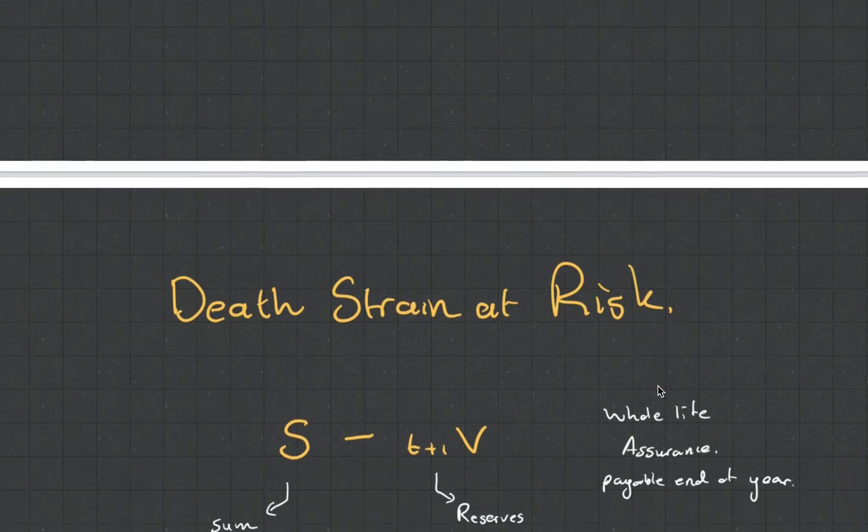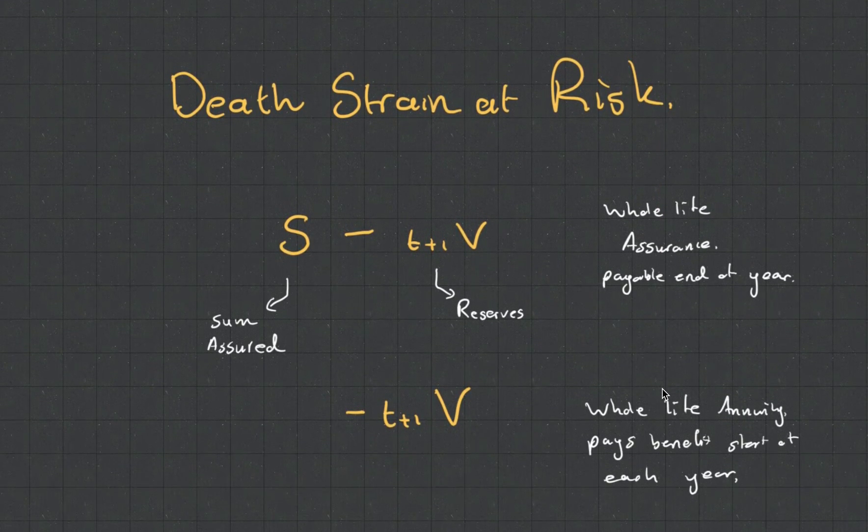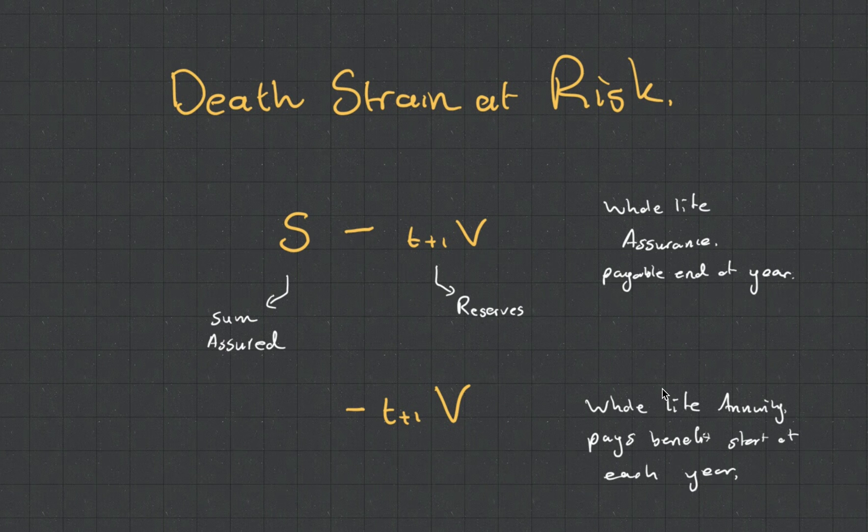The last thing I want to talk about in this video and chapter is death strain at risk. Death strain at risk is essentially what the name says - the financial strain the company will take on if you die. For an assurance contract, the death strain equals the sum assured less the amount of reserves we've had. If we're going to pay someone $50,000 and we've got $20,000 reserved for them and they die, the death strain at risk will be $30,000 for that person.